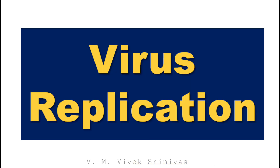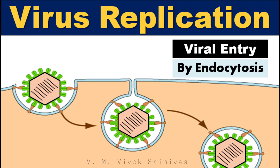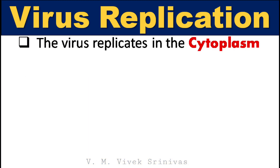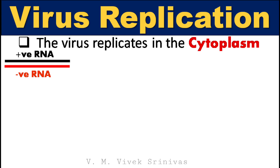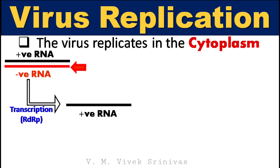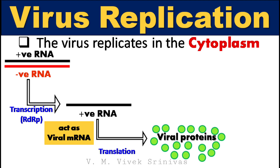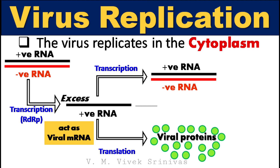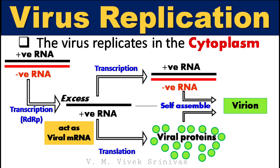Virus replication. This virus enters the host by endocytosis. Following entry, the virus replicates in the cytoplasm. The genome is double-stranded RNA; only the negative-sense RNA is transcribed to synthesize the positive-sense RNA. This positive-sense RNA, which is similar to mRNA, is translated for viral proteins. These positive-sense RNA are synthesized in excess, and on the other side, the excess positive-sense RNA act as a template for negative-sense strand synthesis. These synthesized double-stranded viral RNA and translated viral proteins self-assemble to form the virion.